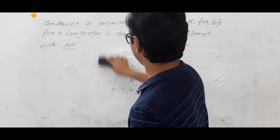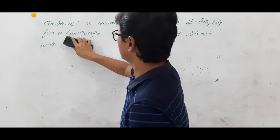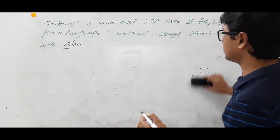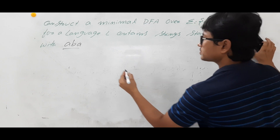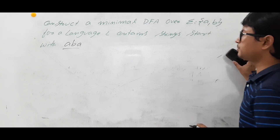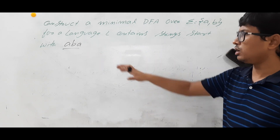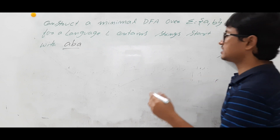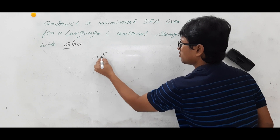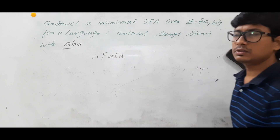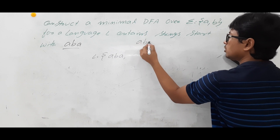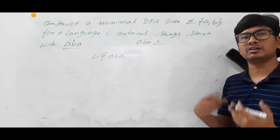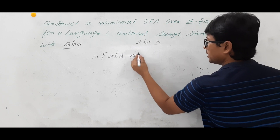Now we will take another example for better understanding: strings starting with ABA. Any string which belongs to language L should always start with ABA. The smallest string in language L is ABA. After ABA, anything can come — A, B, any number of A's or B's — so it is an infinite language.